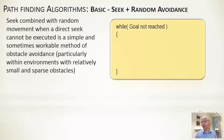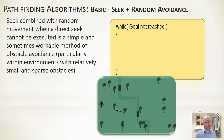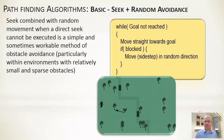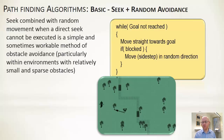We'll start with a few remarkably simple techniques that in many cases are perfectly fine, then work towards more sophisticated ones. The simplest approach is to seek straight towards the target. If something is in the way, we randomly move one step left or right — just sidestepping in a random direction. In an open environment with small, sparse obstacles, this actually works perfectly fine.